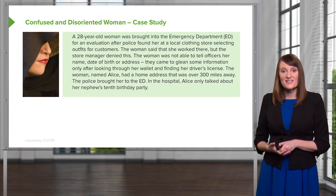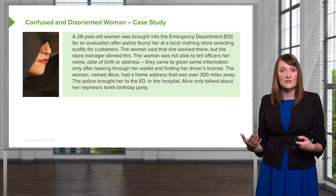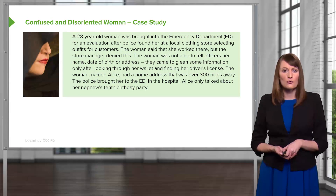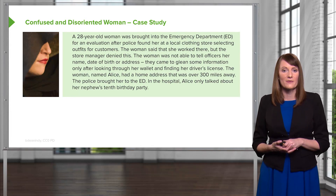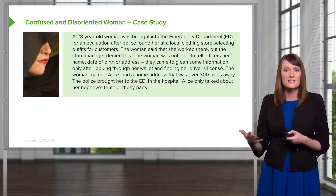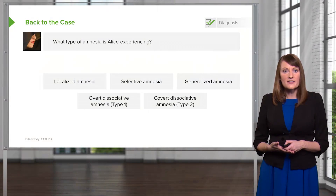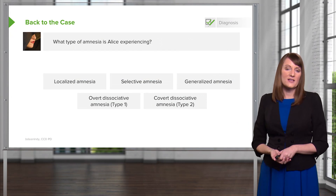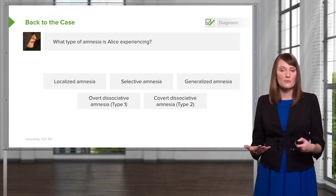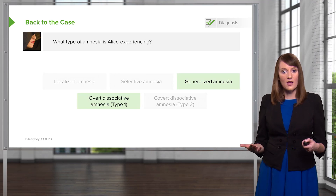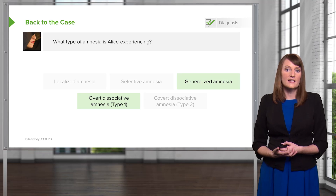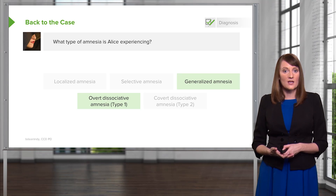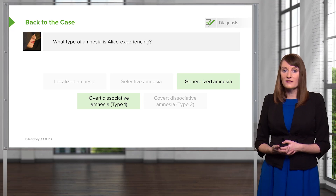Returning to the case introduced in the overview of dissociation — Alice, who appeared in an emergency room after being found in a clothing store where she thought she was working but wasn't actually employed there. She can't remember anything about herself, but she's telling you odd details about her nephew's birthday party. Based on this, Alice is experiencing generalized amnesia, and it's actually overt dissociative amnesia — Type 1. That's the overview of dissociative amnesia, covering its definition, epidemiology, diagnostic criteria, and assessment.